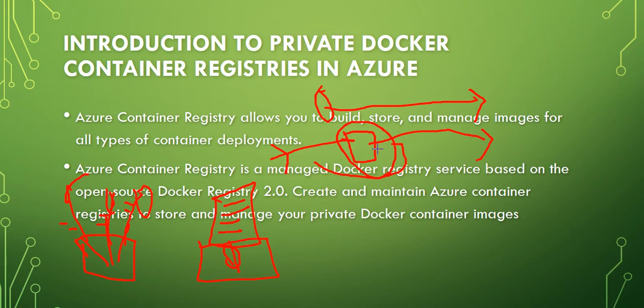If I had used a container image, it would bring in all the dependencies, executables, and libraries with itself. It would not depend on my version of Tomcat — it would build the Tomcat 7 Docker image itself and run it. There would be no chance of that containerized image failing at my end. I will explain this further in future sections.